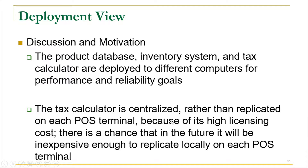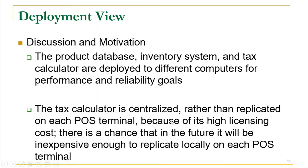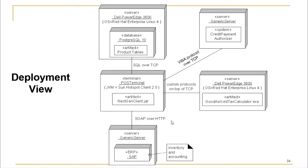For the deployment view text, you add discussion and motivation in a similar manner. For example: 'The tax calculator is centralized rather than replicated on each bus terminal because of its high licensing cost.' This explains that the tax calculator is not placed on every terminal but is centrally located, with every terminal accessing it. You then display this in a UML deployment diagram showing the organization and interaction of nodes.